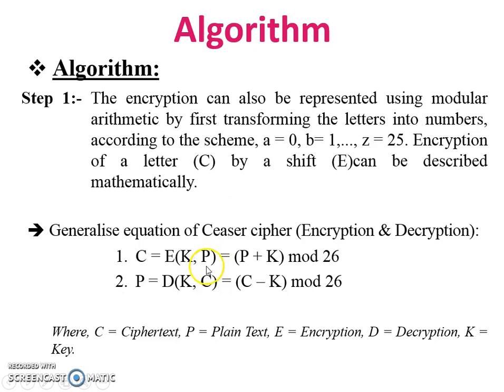You can see here, the plaintext is encrypted with the help of key to generate ciphertext, and ciphertext is decrypted with the help of key to generate plaintext. The mathematical equation is: C = E(K, P) = (P + K) mod 26, and for decryption: P = D(K, C) = (C - K) mod 26.